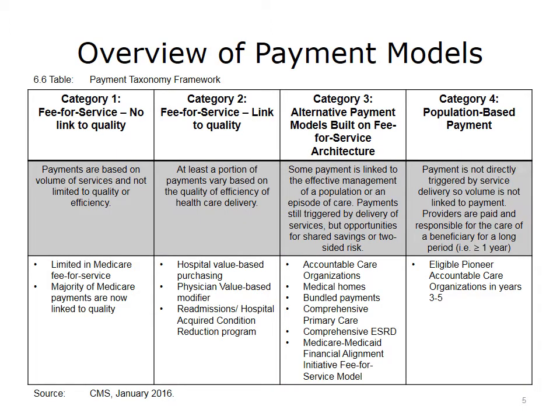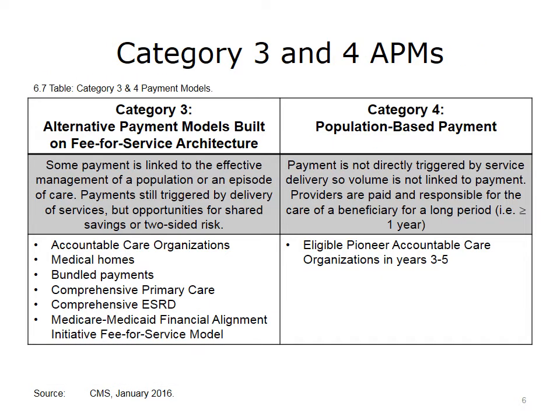This lecture focuses on alternative payment models, or APMs, linked to effective management of a population of patients or to an episode of care. These payment models fall into Categories 3 and 4 of the HHS payment framework taxonomy. Category 3 models include alternative payment models built on fee-for-service architecture, and Category 4 includes population-based payment models. Category 3 models begin to add links to the effective management of a population or episode of care, and include accountable care organizations, medical homes, bundled payments, comprehensive primary care, comprehensive ESRD, and the Medicare-Medicaid financial alignment initiative fee-for-service model.